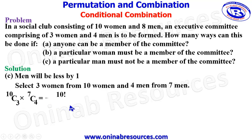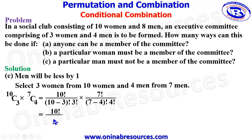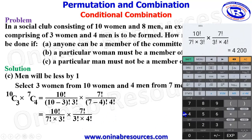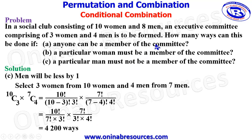This gives us 10! / ((10−3)! × 3!) multiplied by 7! / ((7−4)! × 4!). Expanding: 10! / (7! × 3!) multiplied by 7! / (3! × 4!). Inputting into our calculator: 10! divided by 7! and 3!, times 7! divided by 3! and 4!. We have 4,200 ways of forming a committee from 10 women and 8 men comprising 3 women and 4 men if a particular man must not be a member of the committee.